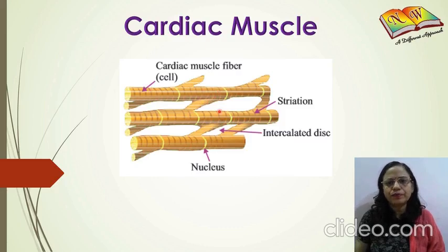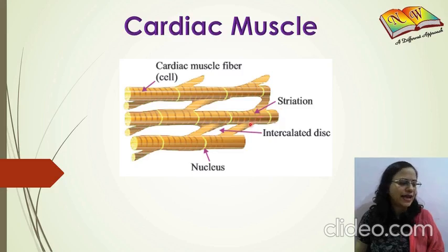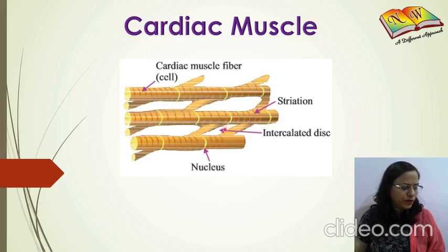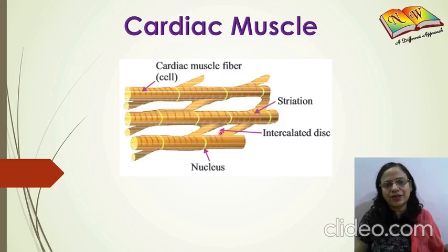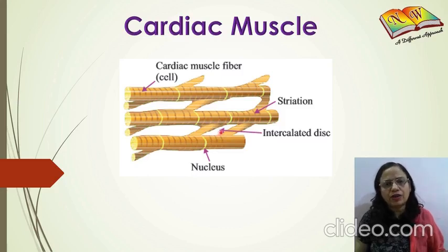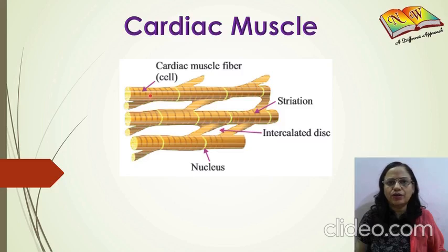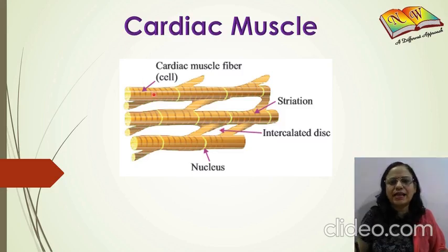The cells of cardiac muscles are branched. The striations are very faint — you can see bands present, but they are much fainter compared to striated muscles. These muscles are found only in the heart and are involuntary in nature — you cannot control the pumping of your heart, make it beat faster, or slow it down.